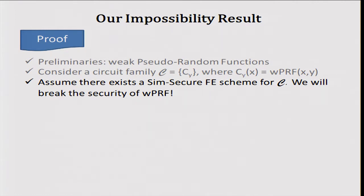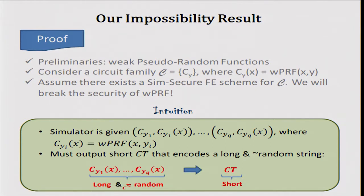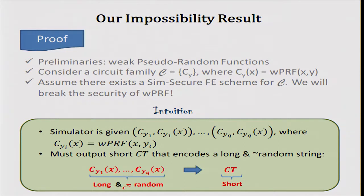Assume there exists a simulation-secure functional encryption for this class C, and let's see how we can break the security of weak PRFs. The basic intuition is that the simulator is given only the circuit evaluations: C_{y_1}(x) up to C_{y_Q}(x) — evaluations of the weak PRF on different input points. Its goal is to come up with a ciphertext that encodes this very long string, with Q set to be very large, and the string is indistinguishable from random. The simulator must produce a ciphertext such that given the ciphertext and all secret keys it properly decrypts to the correct values — but this sequence is long and pseudorandom and cannot be compressed into something short. This is the main intuition of the impossibility result.